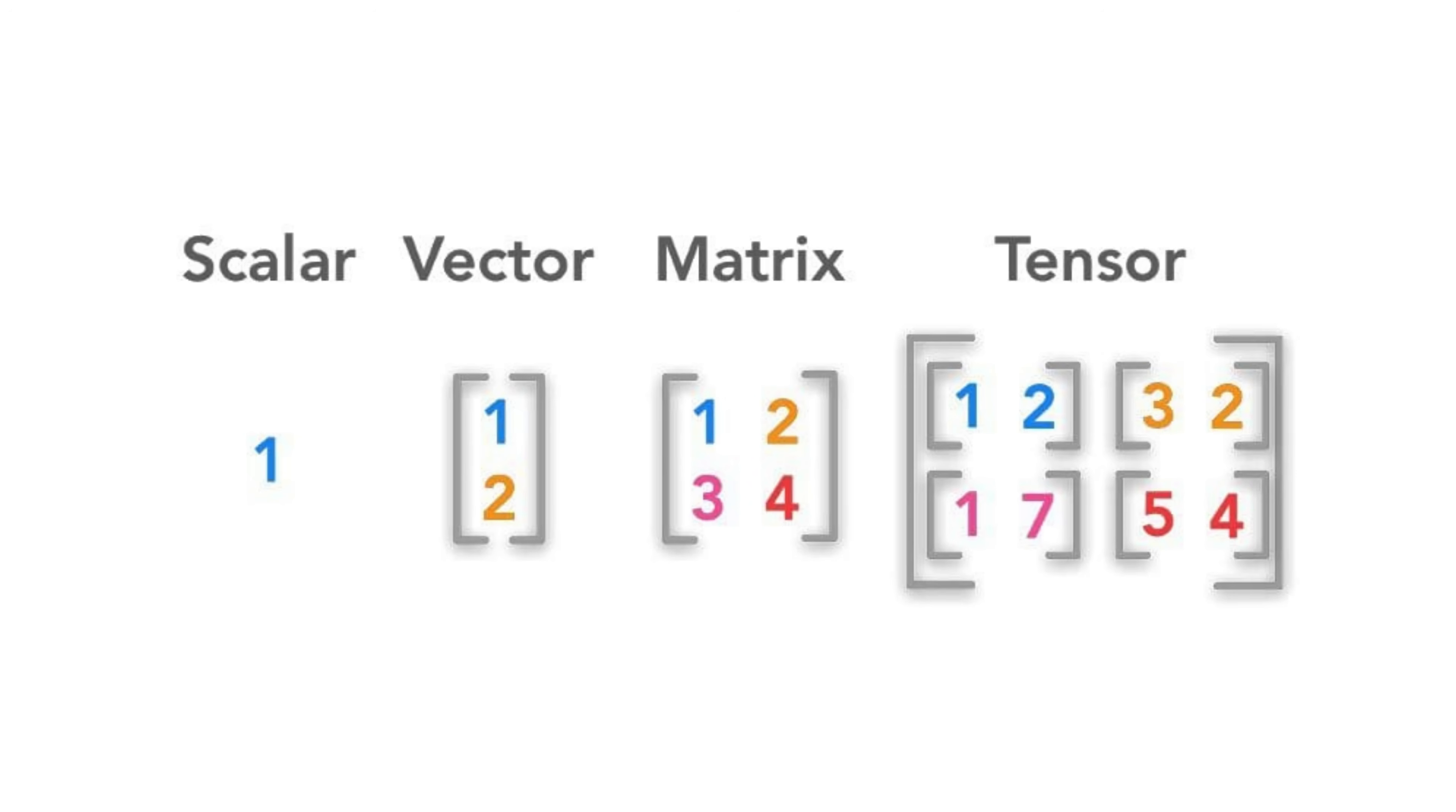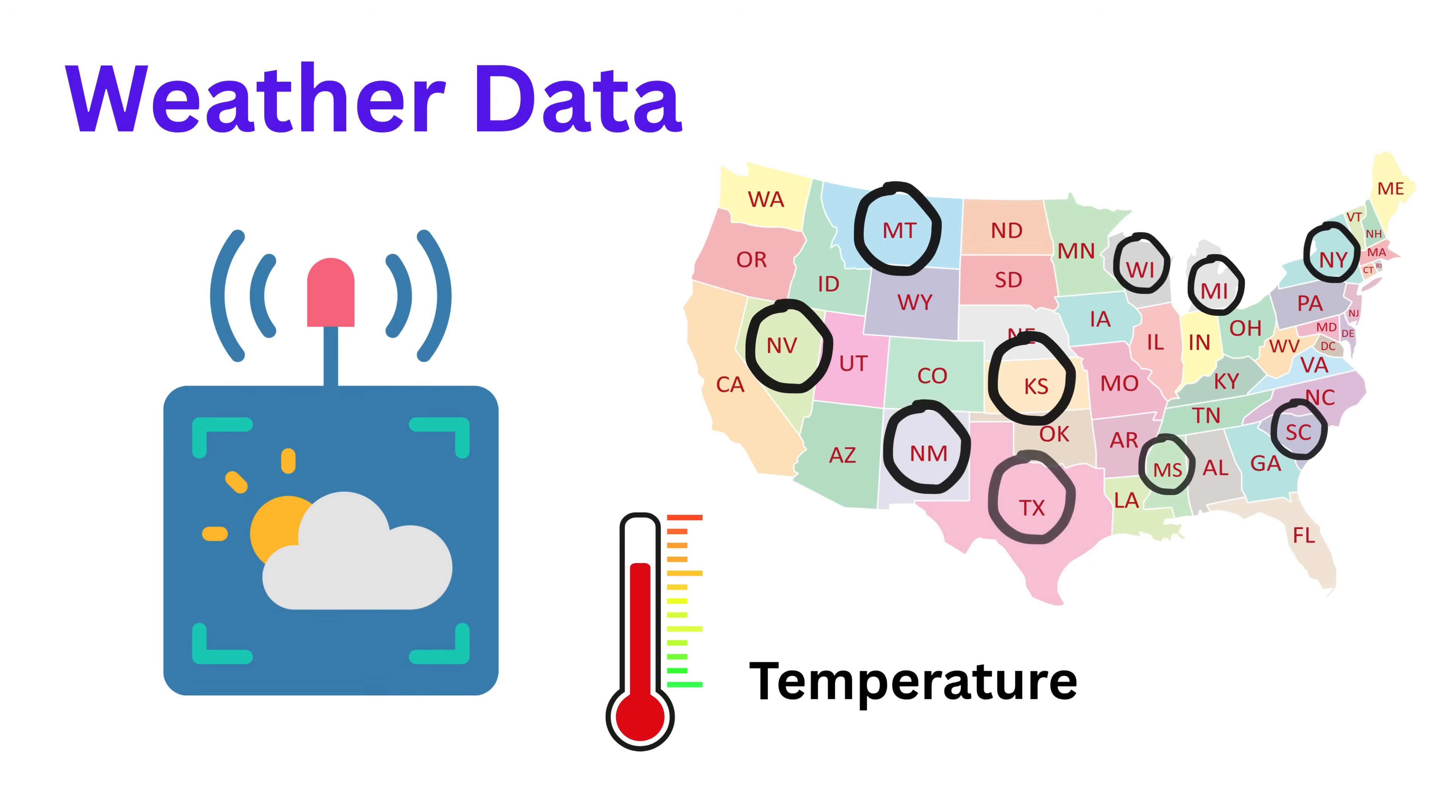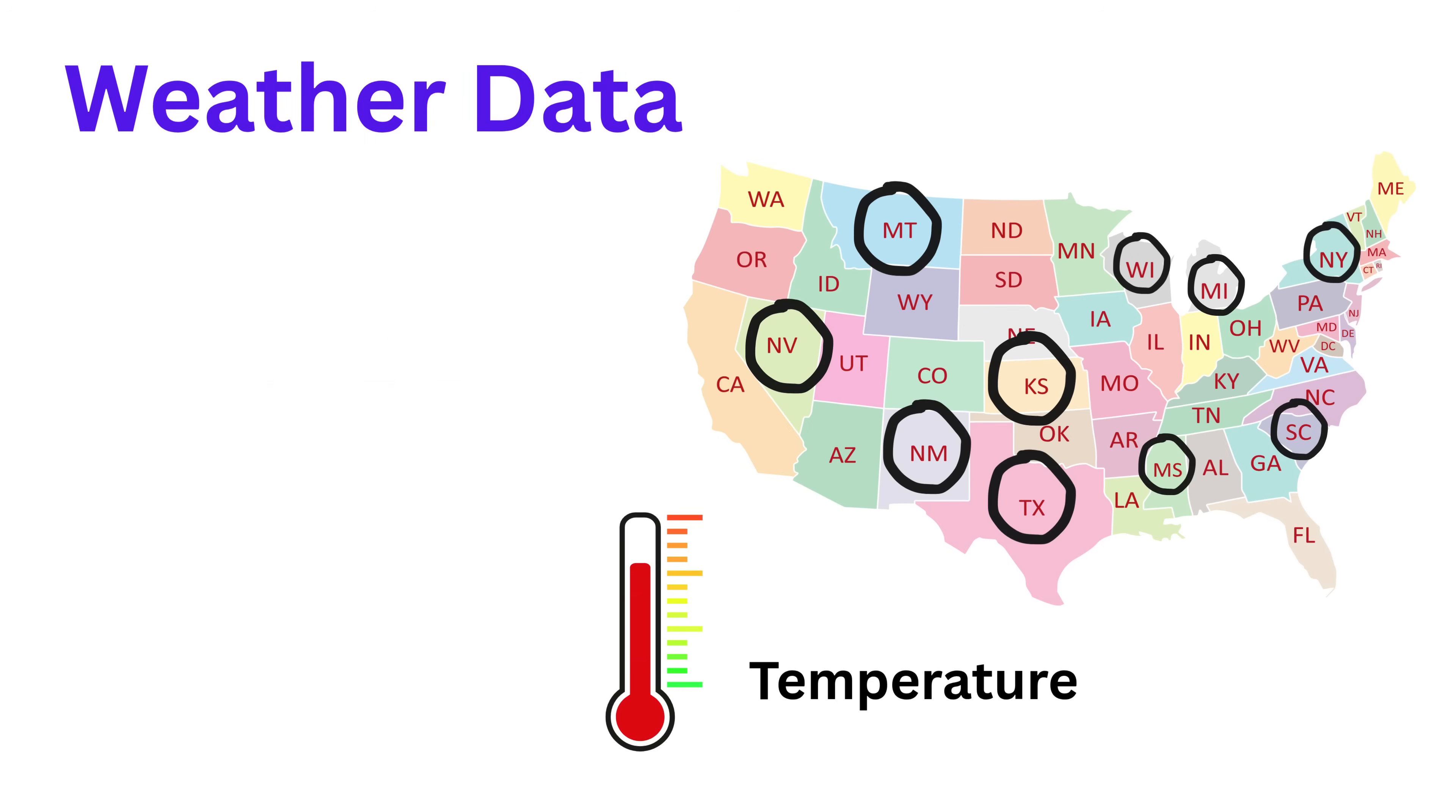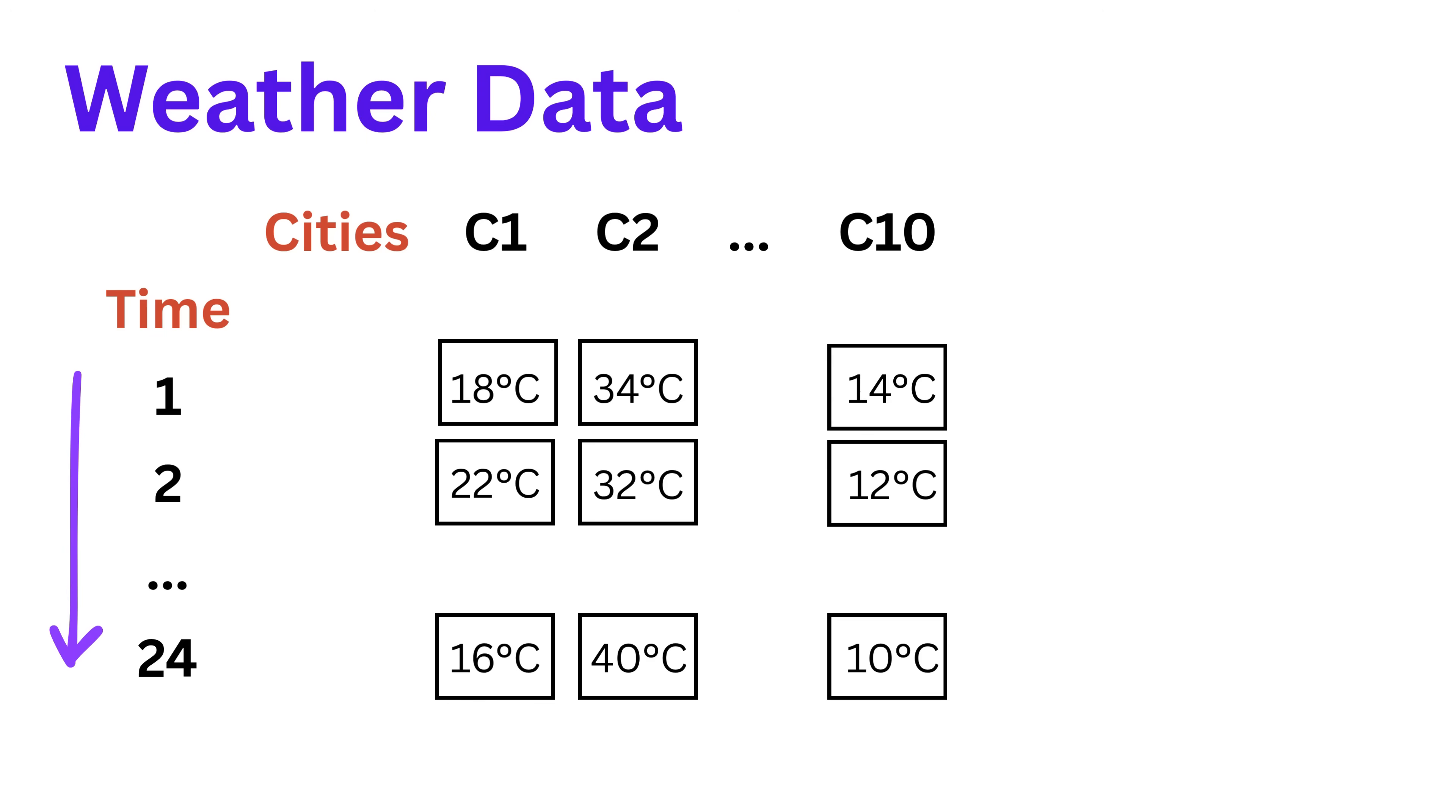Perfect. Now that you've understood tensors using pixels, let's extend that understanding to other real-world examples. First, let's take the example of weather data. Imagine we're tracking temperature readings across different cities over time. Suppose you have temperature data for 10 cities, measured every hour for 24 hours. You can store this as a two-dimensional tensor, 24 rows for each hour, and 10 columns for each city.